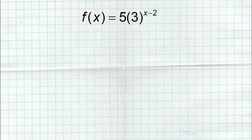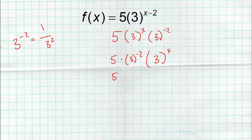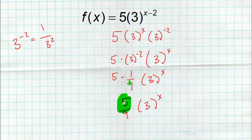Let's do another one: 5 times 3 to the x minus 2. The 5 is my constant; leave it alone. Subtraction is just addition of a negative, so I can separate that to 3 to the x times 3 to the negative 2. I put 3 to the x in the back — that's my b to the x. Out front I have 5 times 3 to the negative 2. Now 3 to the negative 2 is 1 over 3 squared, which is 1 over 9. So that's 5 times 1/9 times 3 raised to the x, giving 5/9 times 3 to the x. My a value is 5/9, my b value is 3, and I have just x as my exponent.